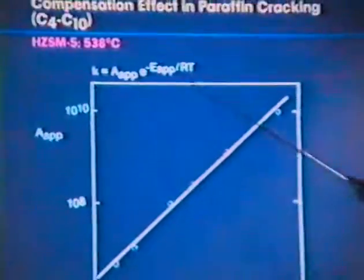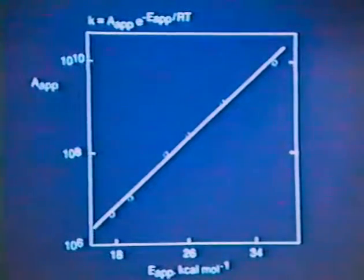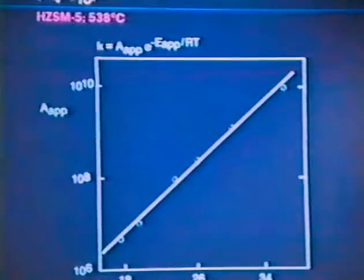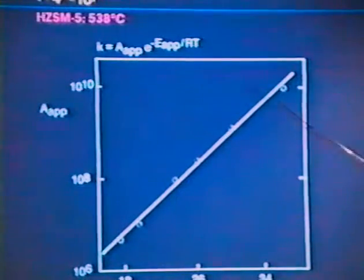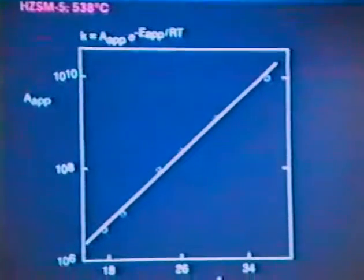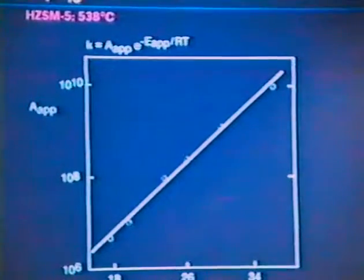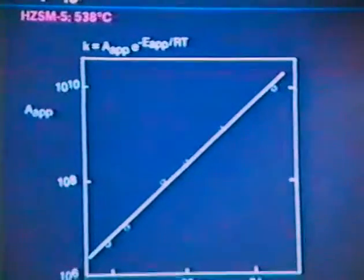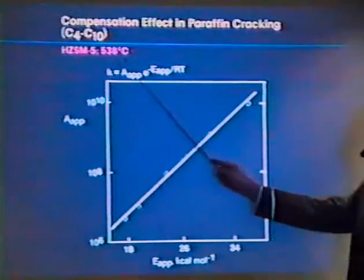And one finds the following, and that's typical for the compensation effect. As the activation energy increases, this would lead, normally, to a drastic decrease in the reaction rate. High activation energy, the reaction slows down dramatically, if that were the only thing that changes. However, the pre-exponential factor makes up for part of this loss, it comes to help, and increases dramatically. So, if the activation energy goes up, the pre-exponential factor goes up by almost four orders of magnitude too.